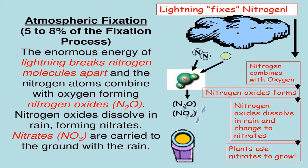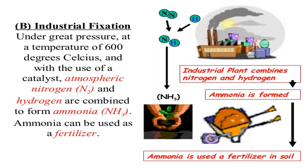These nitrogen atoms combine with oxygen to form nitrogen oxides, which then dissolve into rain and form nitrates. These nitrates dissolve in groundwater, get carried in the ground through rain, and can be utilized by plants to grow.